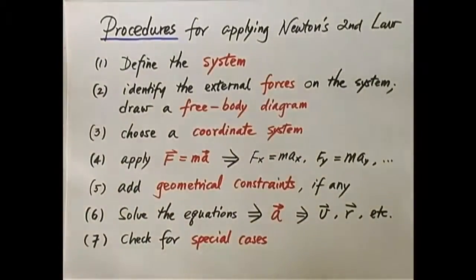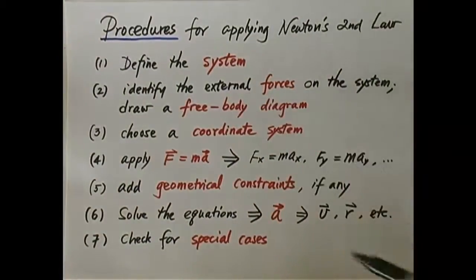First thing first, we must define the so-called system. What is the system? As we explained before, that is a particle, or it can be a collection of particles, to which I'm applying Newton's second law, F equals mA. You have to know what is that object, what is the subject that you're applying Newton's second law to, and that's called the system.